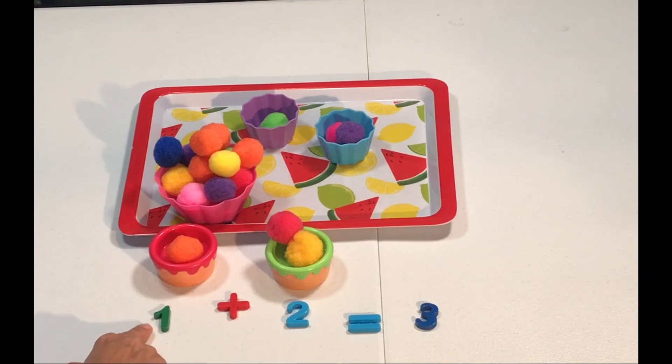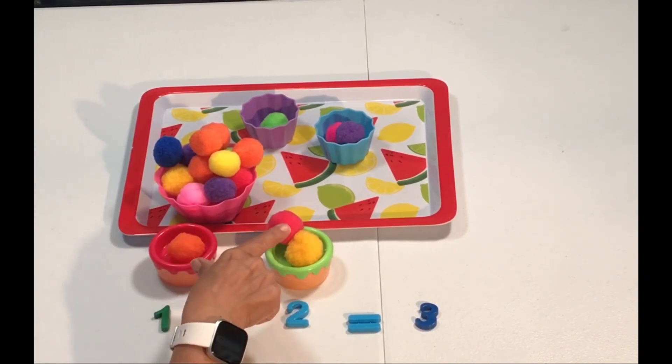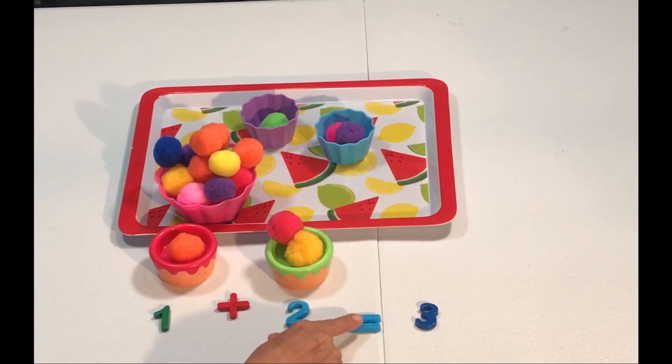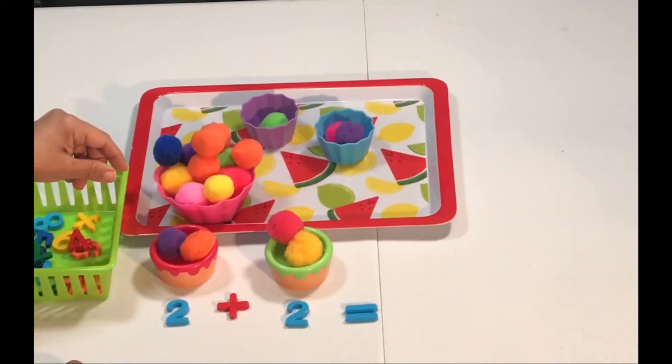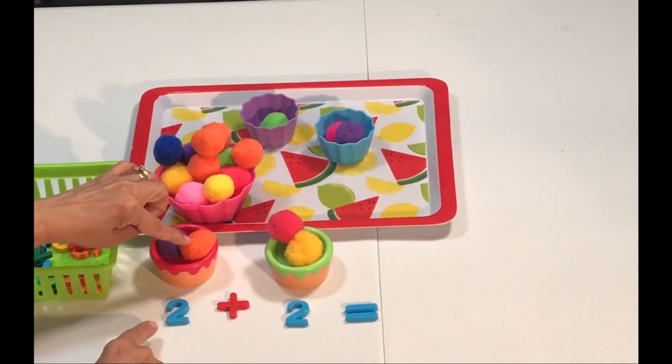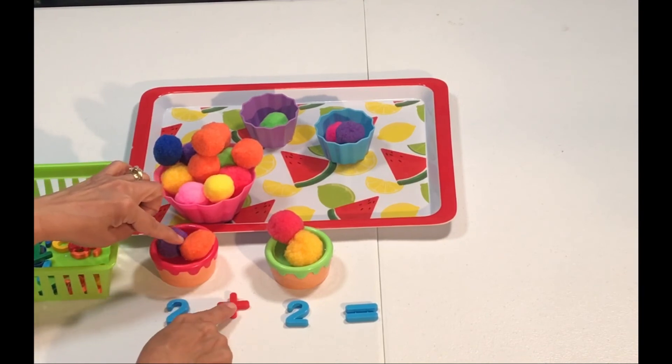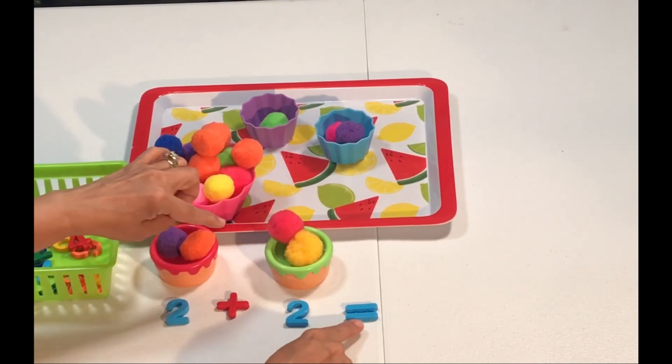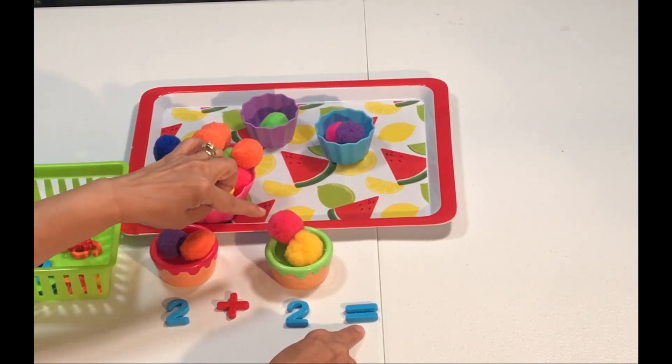You can also do a little math activity using magnetic numbers. We're going to add one plus two equals, we have one, two, three, equals three. We have two, one, two, plus two equals, one, two, three, four.